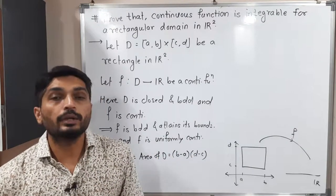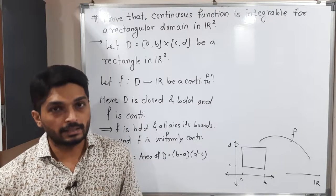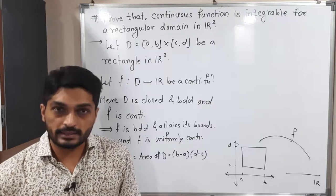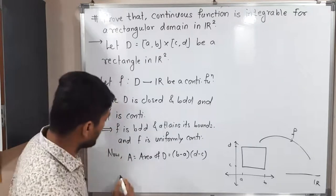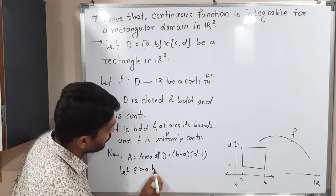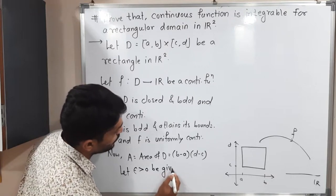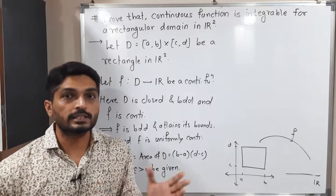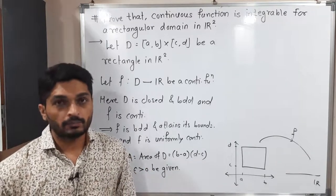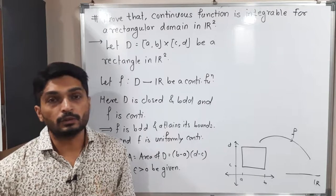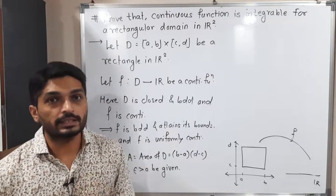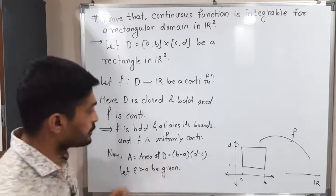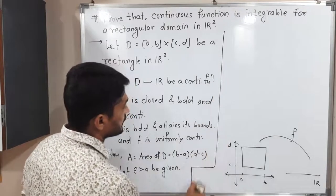We are going to use this criteria to prove the function is integrable. For that purpose, let epsilon greater than zero be given. For this epsilon we have to find a partition which will satisfy that criteria. We have one very important piece of information: F is uniformly continuous, so let us use it.